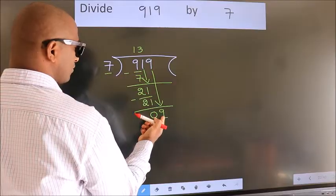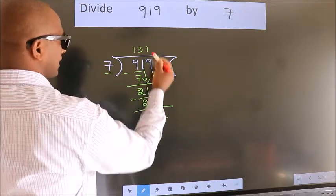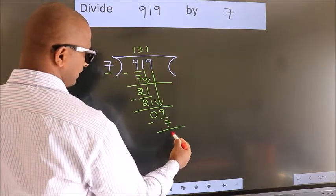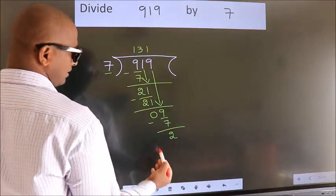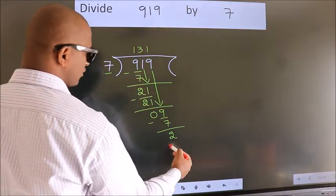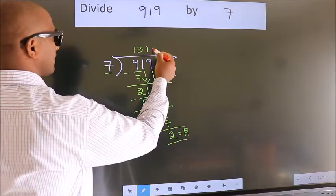A number close to 9 in 7 table is 7 once 7. Now we subtract. We get 2. No more numbers to bring it down. So we stop here. This is our remainder. This is our quotient.